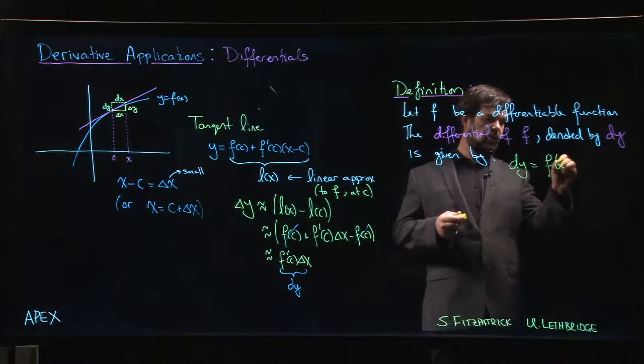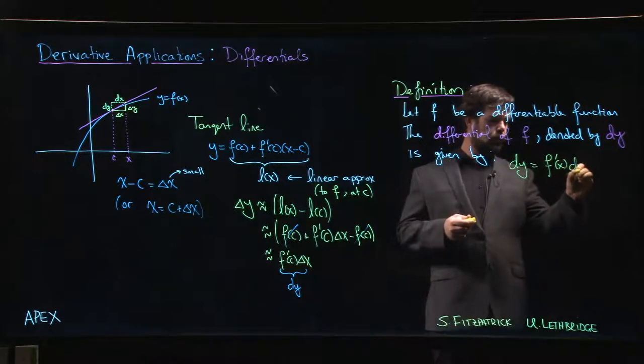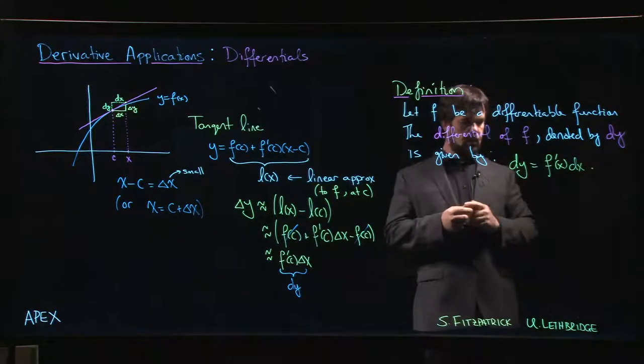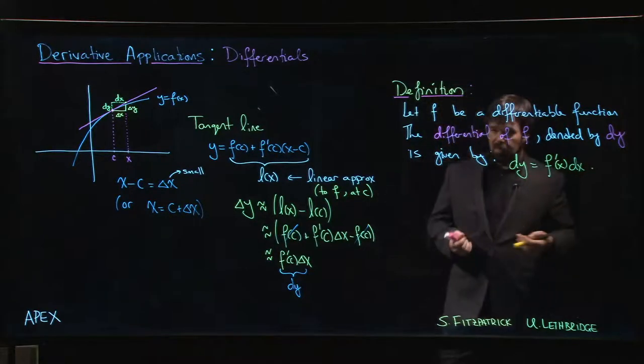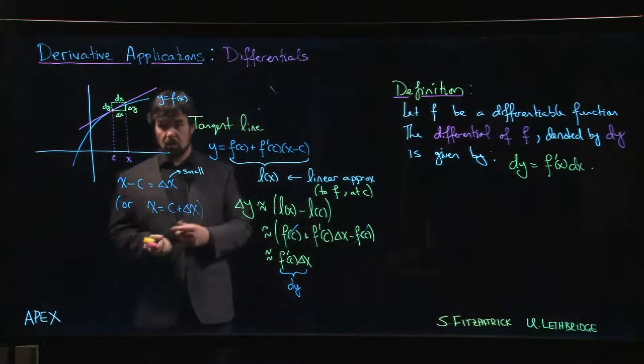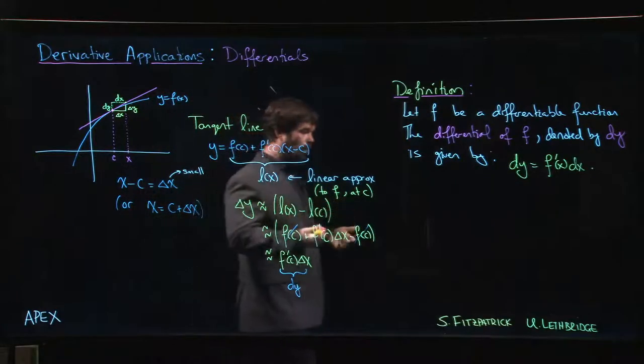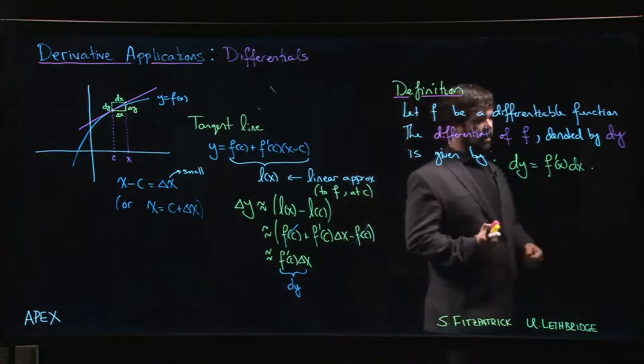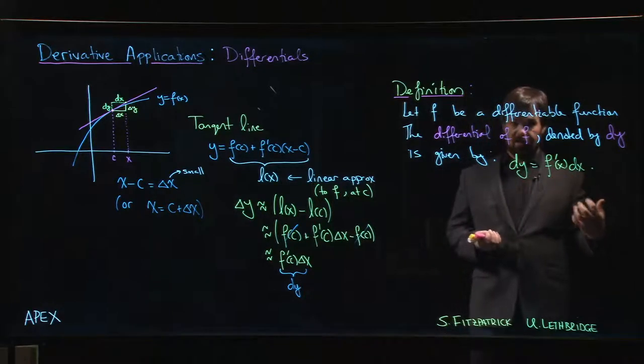It's simply F prime of x times dx. So if you can compute a derivative, you can compute a differential. The only difference between a derivative and a differential is we have this dx tacked on the end.